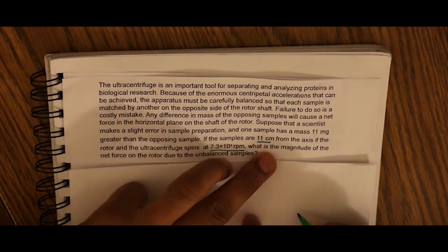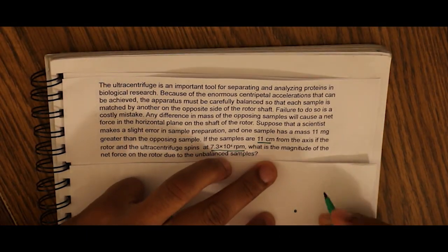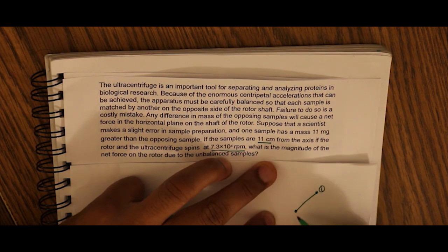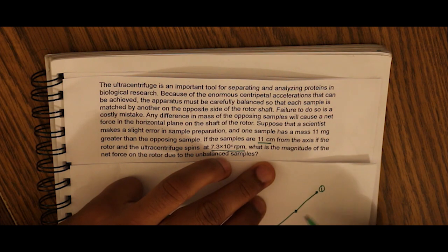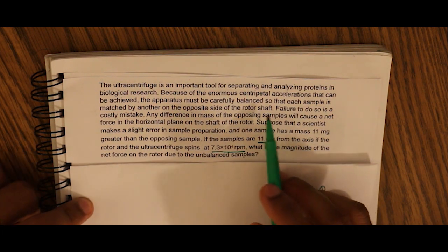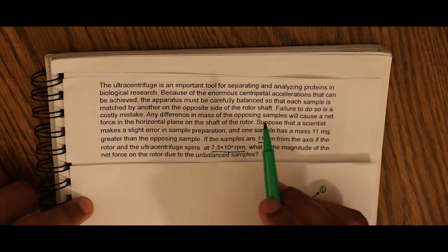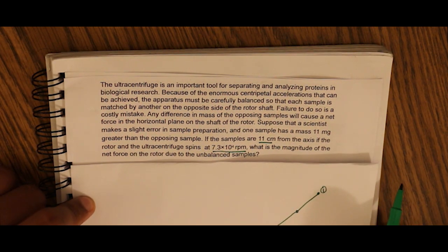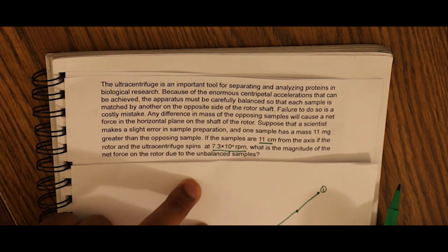Say this is the center of the centrifuge — we have sample one here and sample two here. Failure to balance these two is a costly mistake. Any difference in mass of the opposing samples will cause a net force in the horizontal plane on the shaft of the rotor.